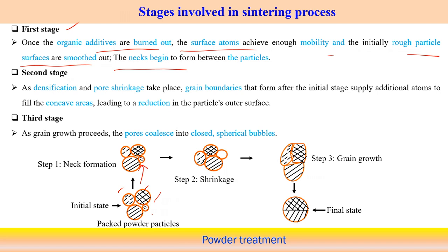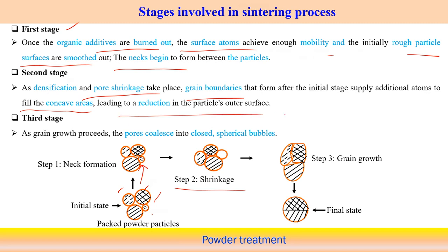In the second stage, densification occurs — it reduces porosity, shrinkage takes place, and grain boundaries formed in the initial stage supply additional atoms to fill concave areas. The particles' outer surface area reduces during densification. In the third stage, grain growth starts — movement of the grain boundary occurs, reaching a final stage that looks like a single grain.